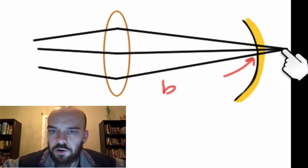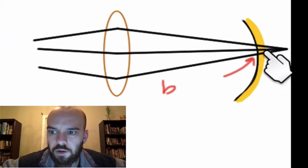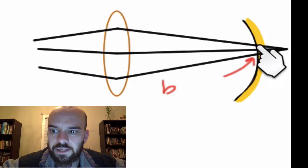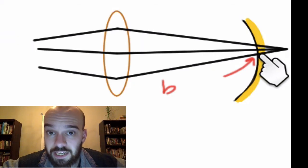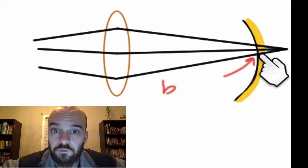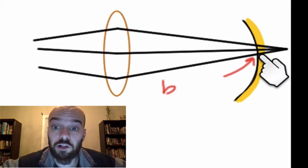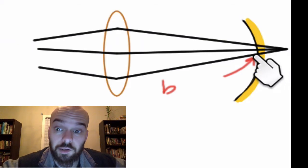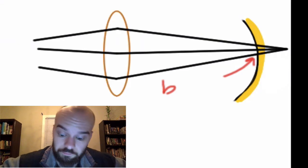You see that the light converges behind the retina, but if you look at where it crosses the retina, it's spread out, and that's going to give a blurry image for things that are close up to somebody who's farsighted.